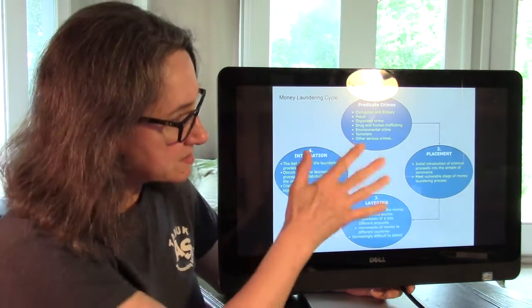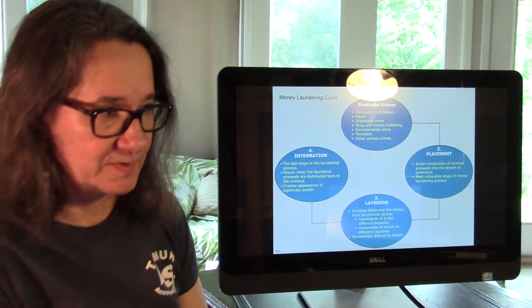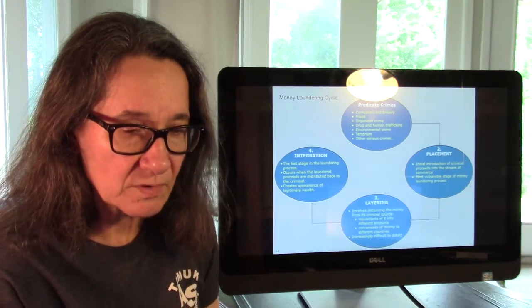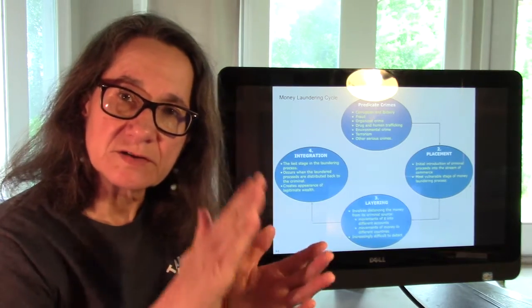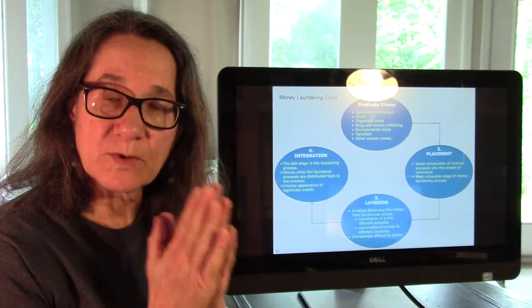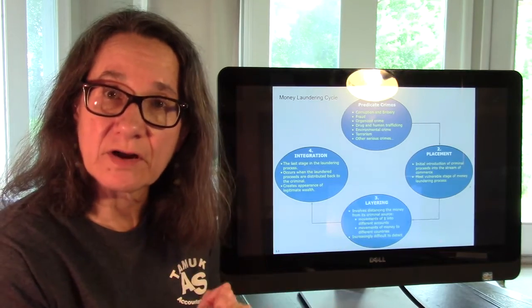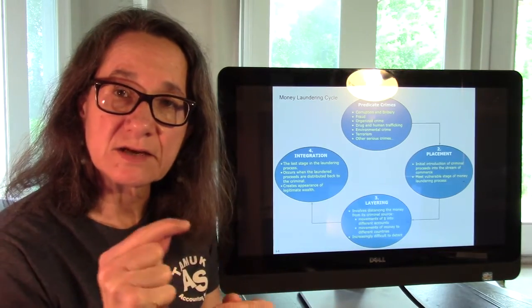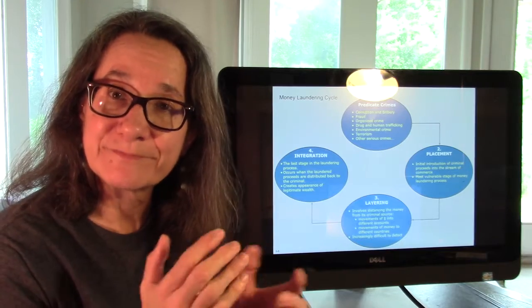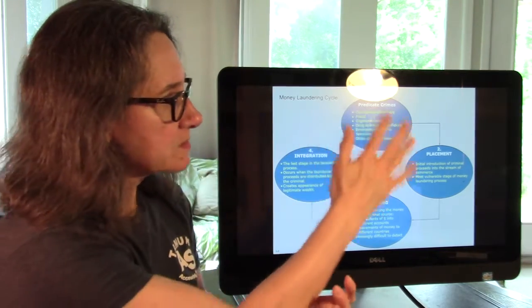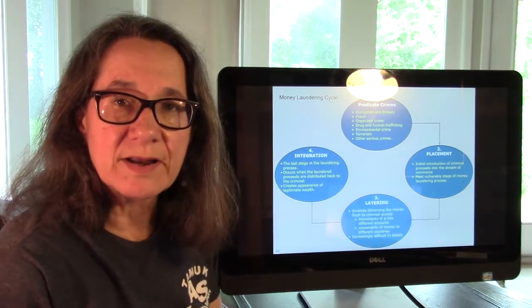So this is the main thing I want you to understand from this video lecture. There's a cycle. There's a way they do this. And so we need to, just like any other kind of fraud, we're understanding the cycle so we can know where to interrupt it. So the first part of the cycle is there's a predicate crime.